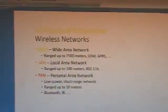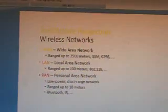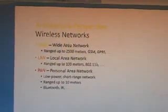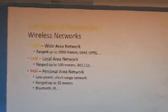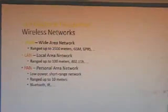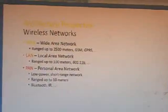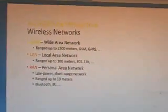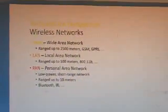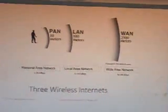The Wide Area Network is WAN, next is LAN — Local Area Network — and next is PAN — Personal Area Network. The Wide Area Network is ranged up to 2500 meters, that is GSM and GPRS. The Local Area Network reaches up to 100 meters, that is 802.11. PAN is a Personal Area Network consisting of low power short range networks reached up to 10 meters — for example, Bluetooth and IR.